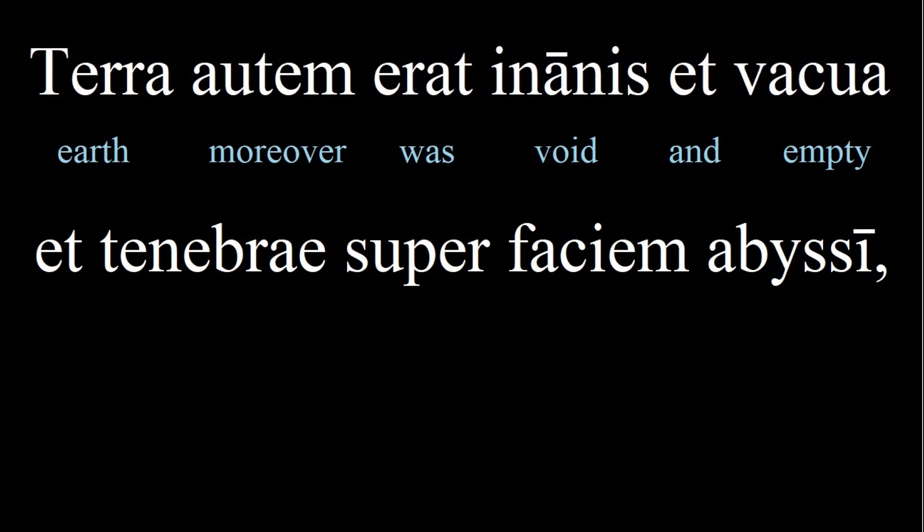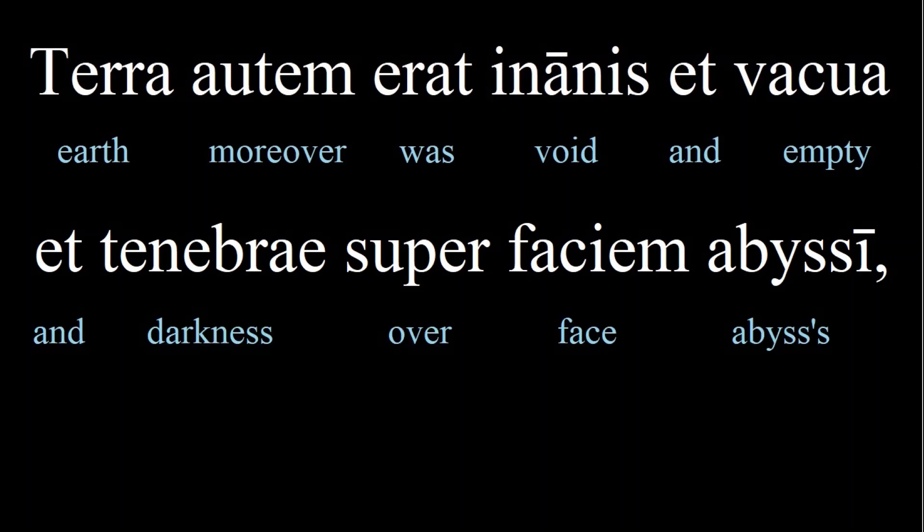Et tenebrae super faciem abyssi. Tenebrae is unusual because it only exists in the plural form. I learned this word by imagining tentacles or tendrils in the darkness. Super is a preposition of position meaning 'over,' and faciem means 'face.' So super faciem abyssi means 'over the face of the abyss,' as it is usually written.